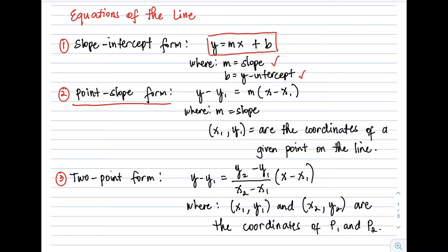The point-slope form has the formula y − y₁ = m(x − x₁), where m is the slope of the line and x₁, y₁ are the coordinates of a given point on the line. We use the point-slope form when the given information is one point and one slope.